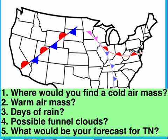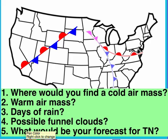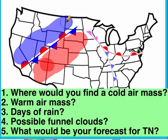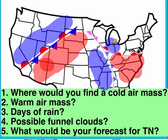Now let's look at a map to identify where different air masses are located based on the fronts shown. For the stationary front, Mr. Gornto identifies the warm air mass on the right side and the cold air mass on the left. Looking at the cold front, Ms. Brown identifies the cold air mass on the left side, with a warm air mass on the other side. For the occluded front, it's cold on either side.